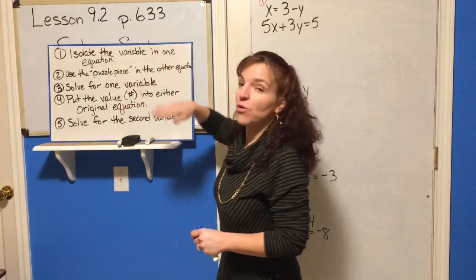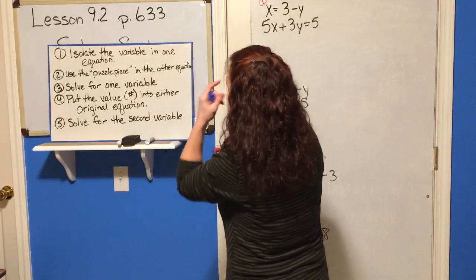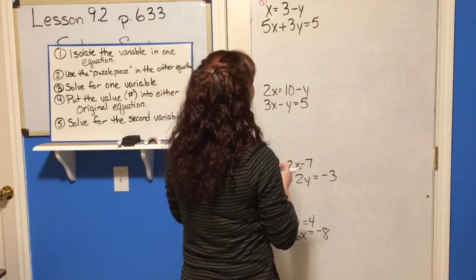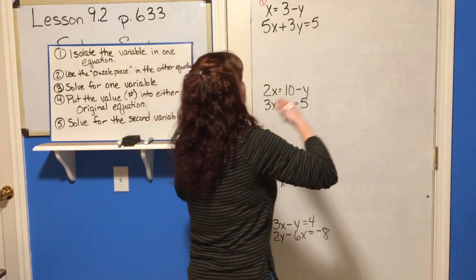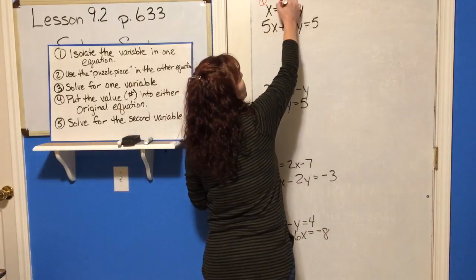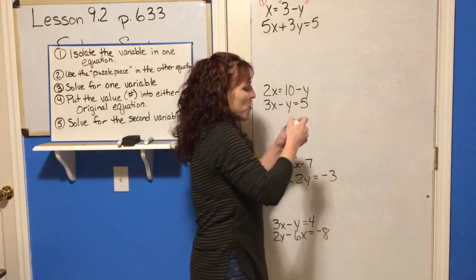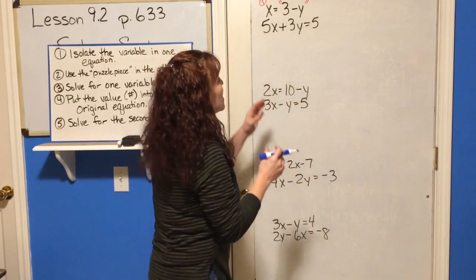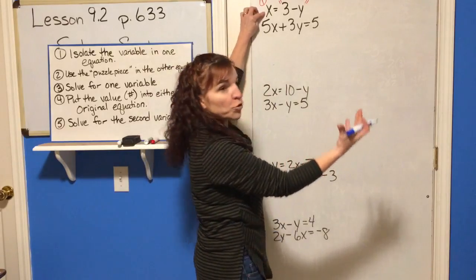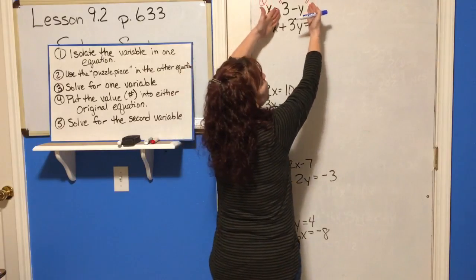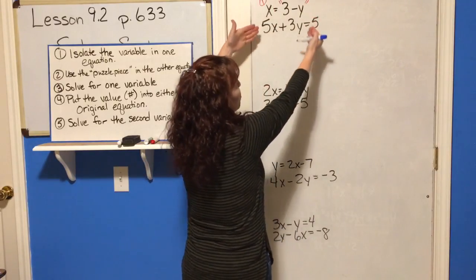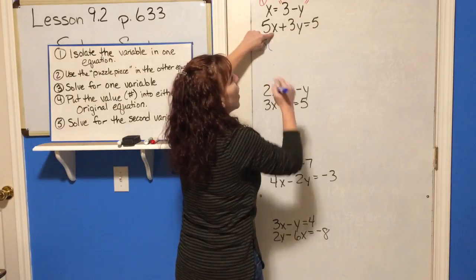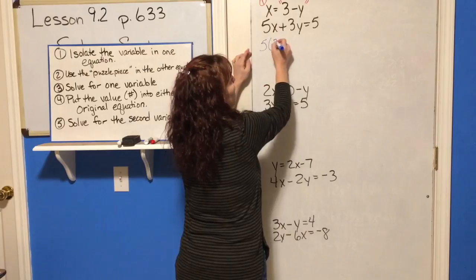Step two says to use the puzzle piece in the other equation. The puzzle piece is whatever x equals — that becomes your puzzle piece. Wherever you see x, you're going to replace it with this whole thing: 3 minus y. So we're going to put it into the other equation: 5 times x, where x is 3 minus y.